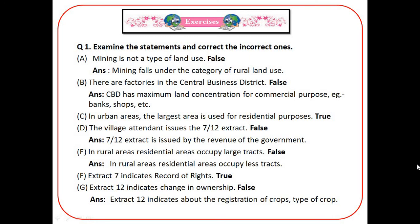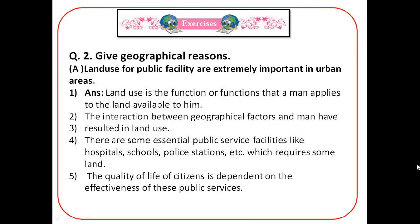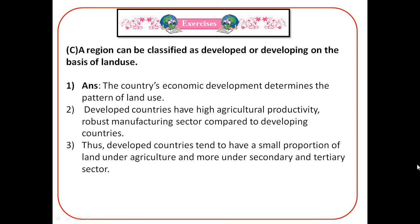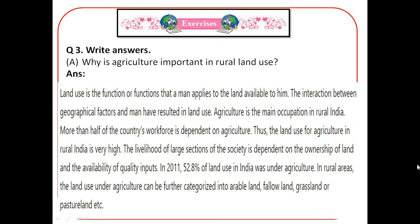Extract 7 indicates record of rights — True. Extract 12 indicates change in ownership — False, it indicates the registration of crops and type of crop. Next question: give reasons. Land use for public facility is extremely important in urban areas — write the answer in points. Next: the record of ownership of non-agricultural land is not the same as that of agricultural land. Next: a region can be classified as developed or developing on the basis of land use.